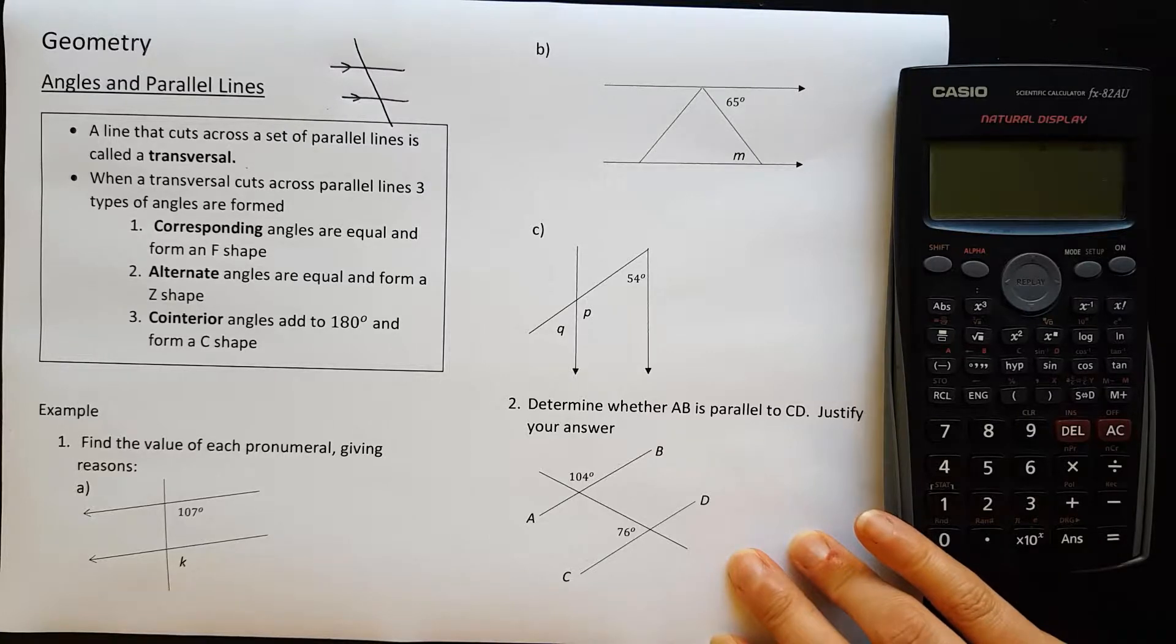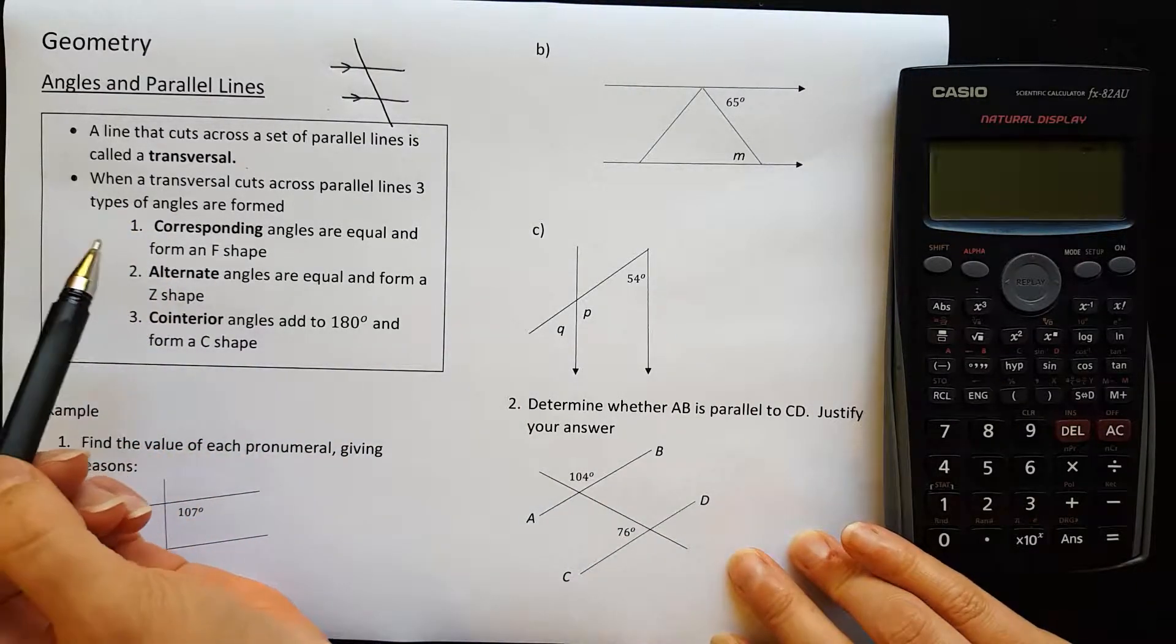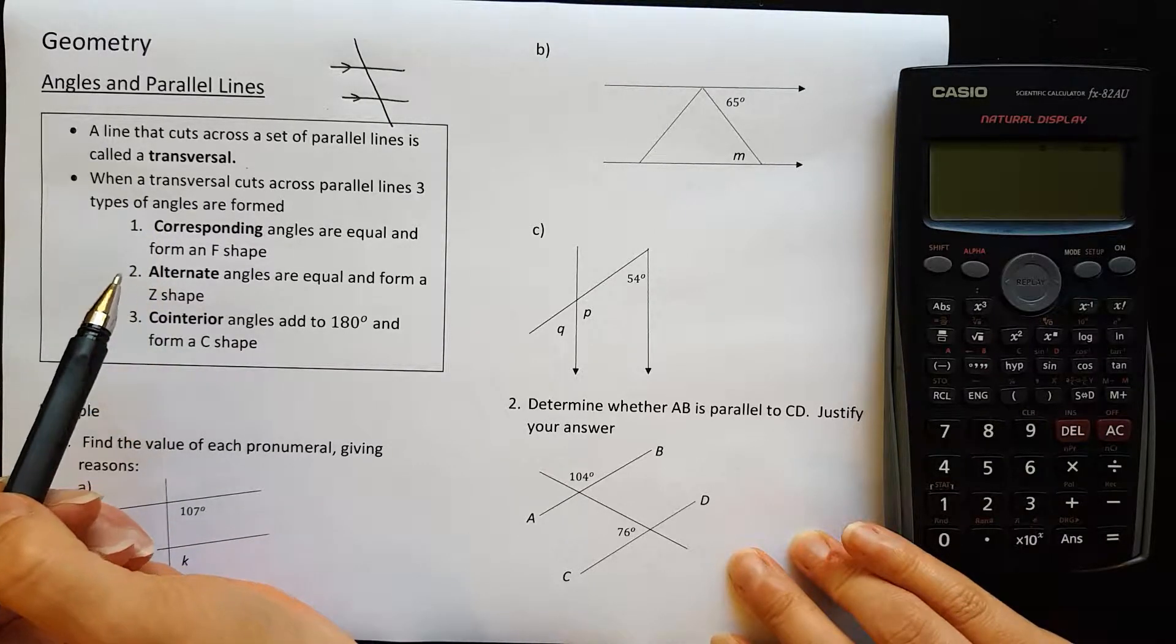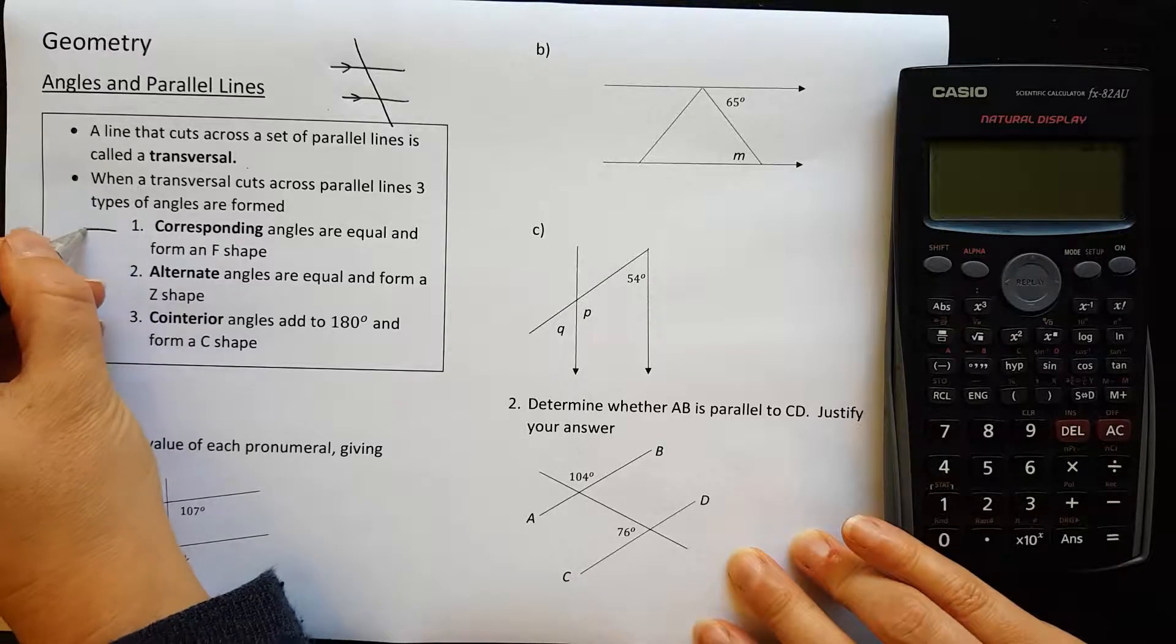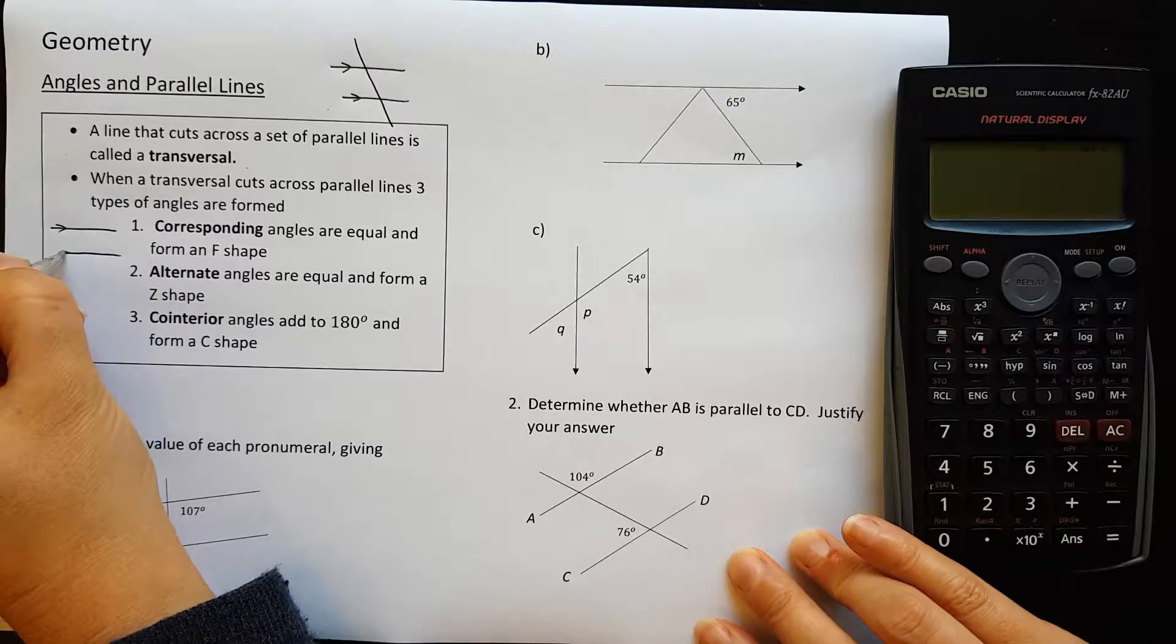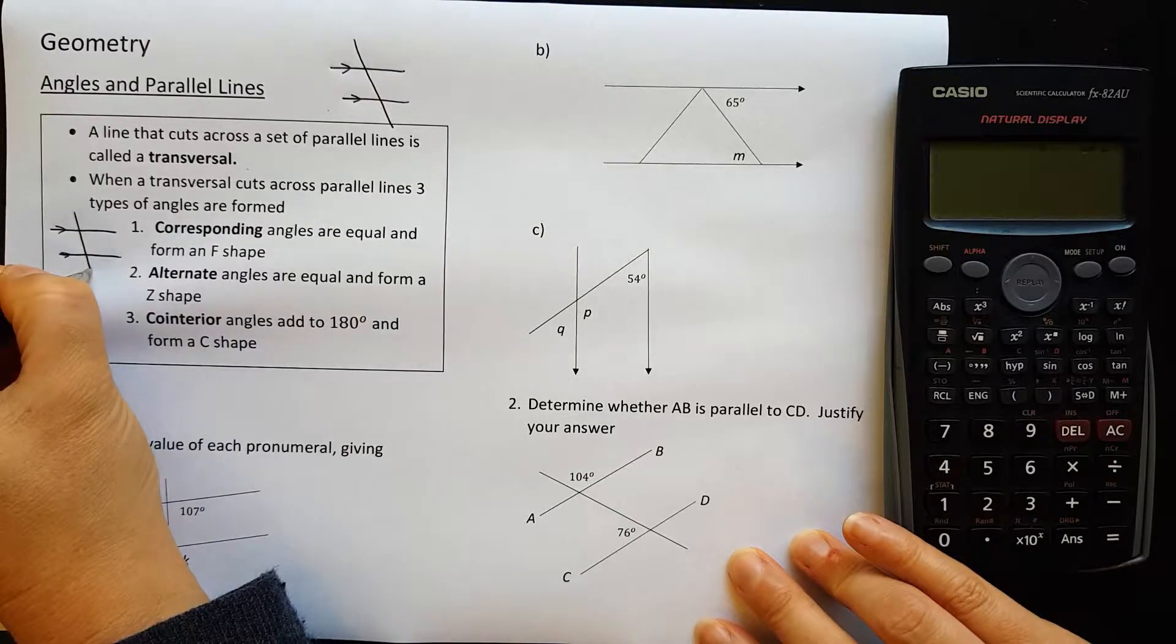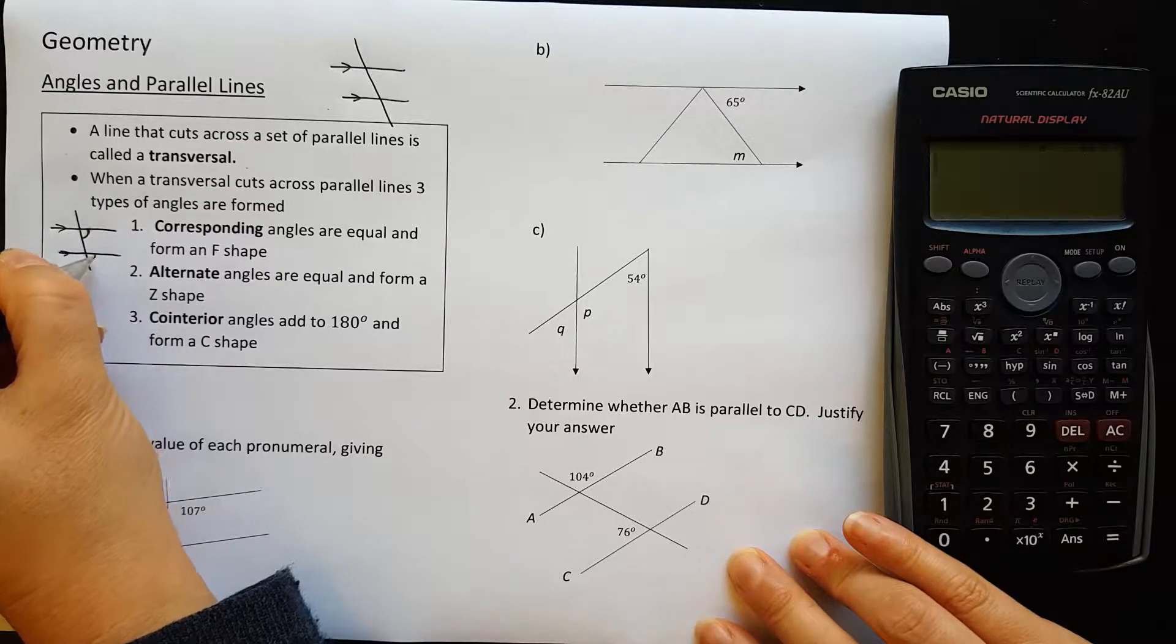Now when that transversal cuts across the parallel lines, there are three types of angles that can be formed. There are corresponding angles which form an F shape. I might draw a little picture of that over here for you. So if I draw my parallel lines and my transversal, the F shape would be that angle and that angle there.